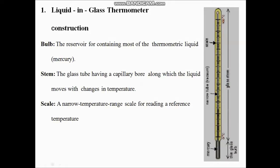This is the liquid-in-glass thermometer. In the diagram you can see the construction — this is just a clinical thermometer. In the downward portion you can see the bulb that is filled with mercury. Then we have a narrow scale and a glass stem shaped like a capillary bore in which the liquid moves as temperature changes. The bulb contains the thermometric liquid, which expands and rises as temperature increases, and falls as temperature decreases. A scale gives the reading.